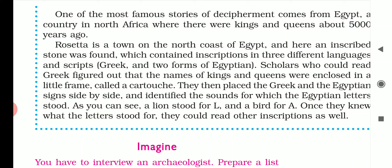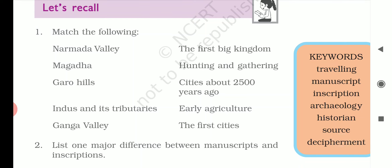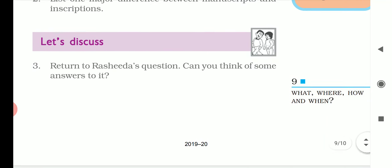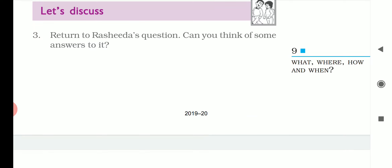Let us do the match-the-following exercise: Narmada Valley, Magadha, Garo Hills, Indus and its tributaries, Ganga Valley. The first big kingdom was Magadha. Try to answer and also list one major difference between manuscripts and inscriptions. Any doubts, send me a message. Thank you very much, bye.